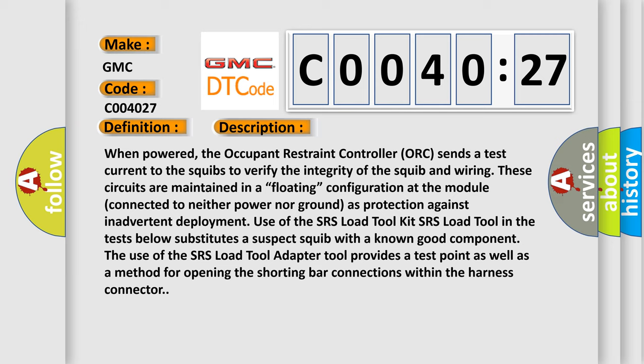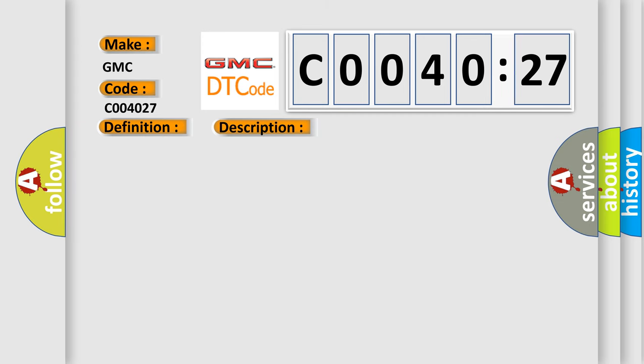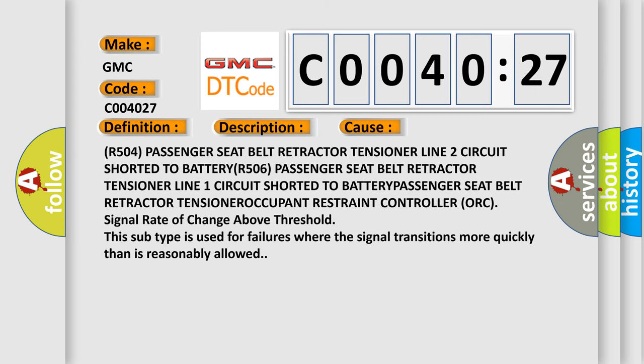The use of the SRS load tool adapter provides a test point as well as a method for opening the shorting bar connections within the harness connector. This diagnostic error occurs most often in these cases: R504 Passenger Seatbelt Retractor Tensioner Line 2 circuit shorted to battery, R506 Passenger Seatbelt Retractor Tensioner Line 1 circuit shorted to battery.